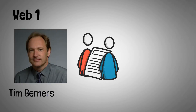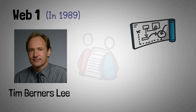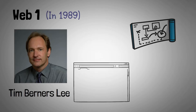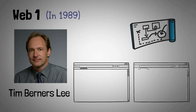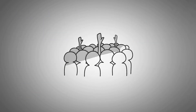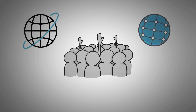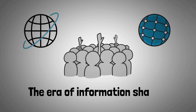Tim Berners-Lee created the first version of the internet, Web 1.0, in 1989. Tim devised a simple project that allows one page in a directory to refer to other pages in the same system via hyperlinks. The concept gained traction and spawned a flood of new browsers, protocols, and technologies, ushering in an era of information sharing.